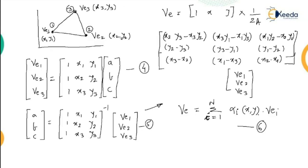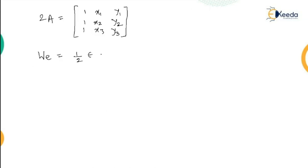The energy per unit length associated with the element can be written as WE = (1/2) × epsilon × [VE]^T × C_element × [VE], where T denotes the transpose of the matrix. The matrix C is normally called the element coefficient matrix. This completes step B.